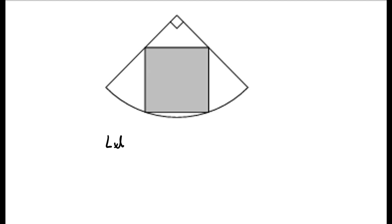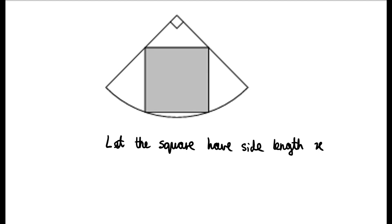Firstly, let's label the side length of the square as x. Now let's label some of the points on the diagram. We'll call the centre of the circle O, the endpoints of the sector A and B, and we'll call the vertices of the square C, D, E, and F. If we label the midpoint of side FE as G, and we draw the line OG and extend it so that it hits the circle, we can see that the figure is clearly symmetrical about this line.